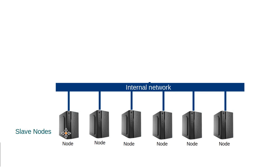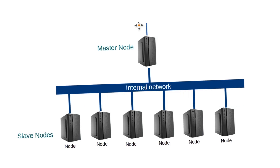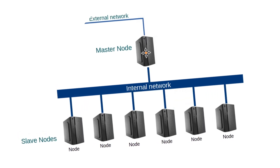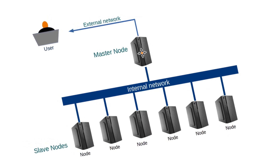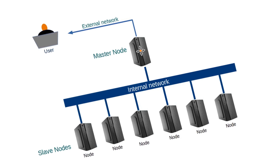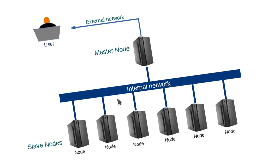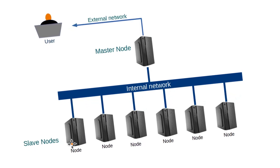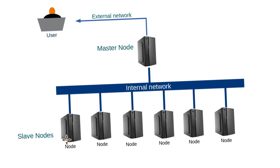These nodes are called slave nodes or computing nodes, and the network is then connected to a master node. A user connects to the master node through an internet connection or external network and submits a job to be executed parallelly by the cluster computer. The master node then subdivides the job into several tasks and distributes them across the slave nodes. Once the slave nodes finish the job, the output will be collected by the master node and made available to the user.